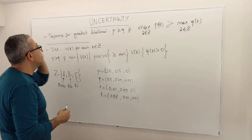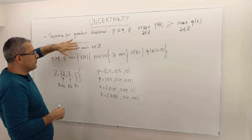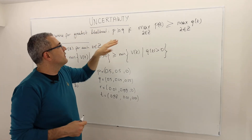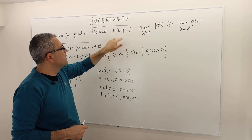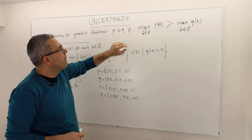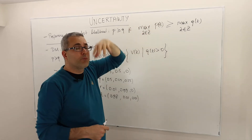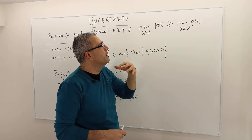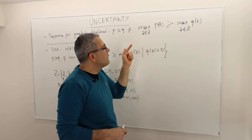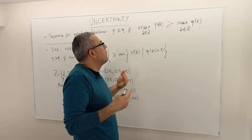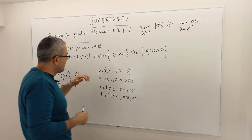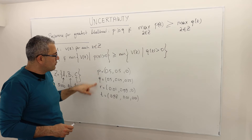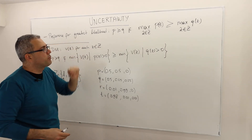In our next example: preference for greatest likelihood. Basically, when the decision maker compares two lotteries, she says P is at least as good as Q if the highest probability in lottery P is higher than the highest probability in lottery Q. So once again, this preference relation ignores the outcomes but looks at the probabilities only. Let's look at those four lotteries P, Q, R, and T — how do we rank them with respect to this preference relation?